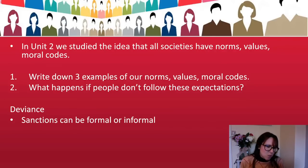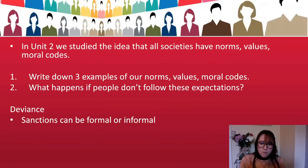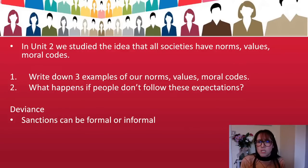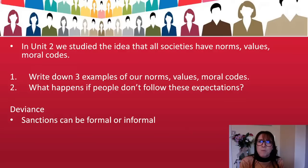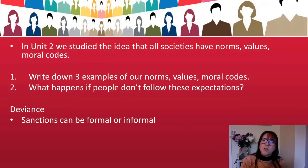We've done deviance a lot. Deviance is obviously where you deviate from the norm. This can be good or it can be bad. For example, Sir Tom, when he raised all of that money in lockdown, that was deviant — that was against the norm. People don't raise millions of pounds like he did. You also have deviance which can be negative things. Deviance, most often though, has more negative connotations than positive.